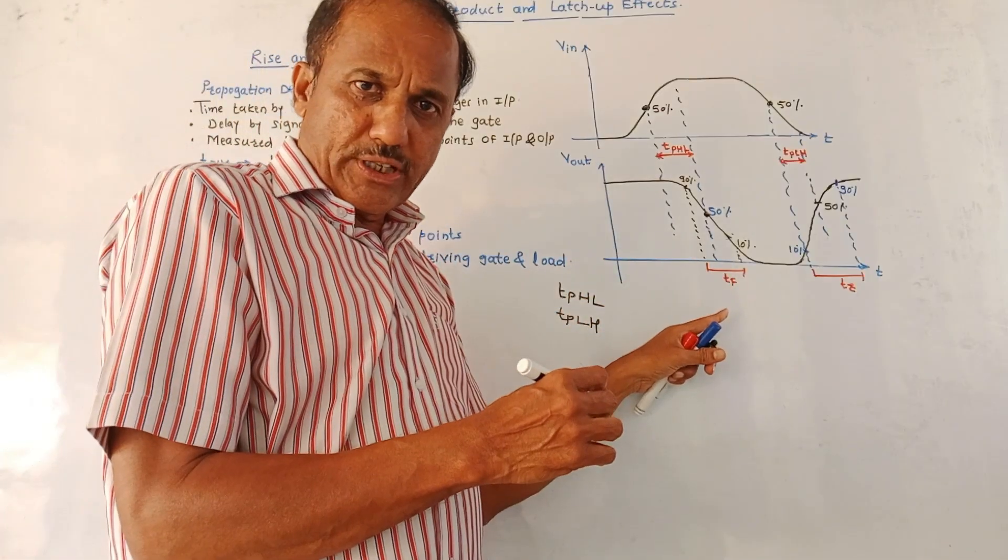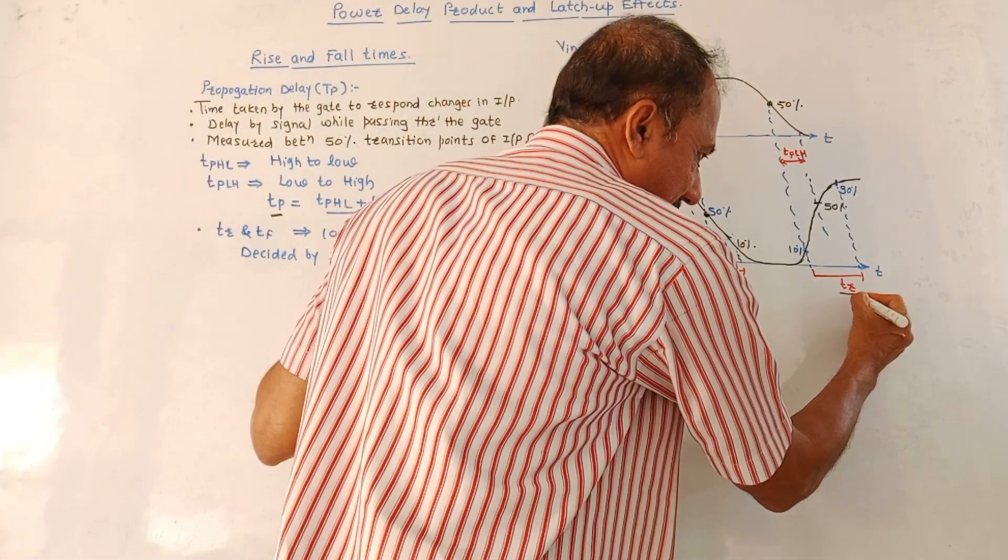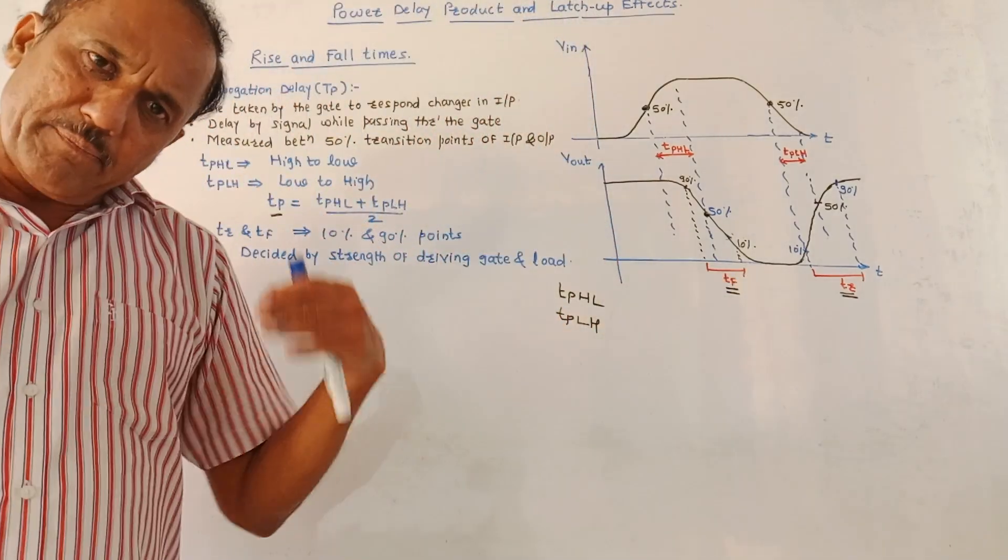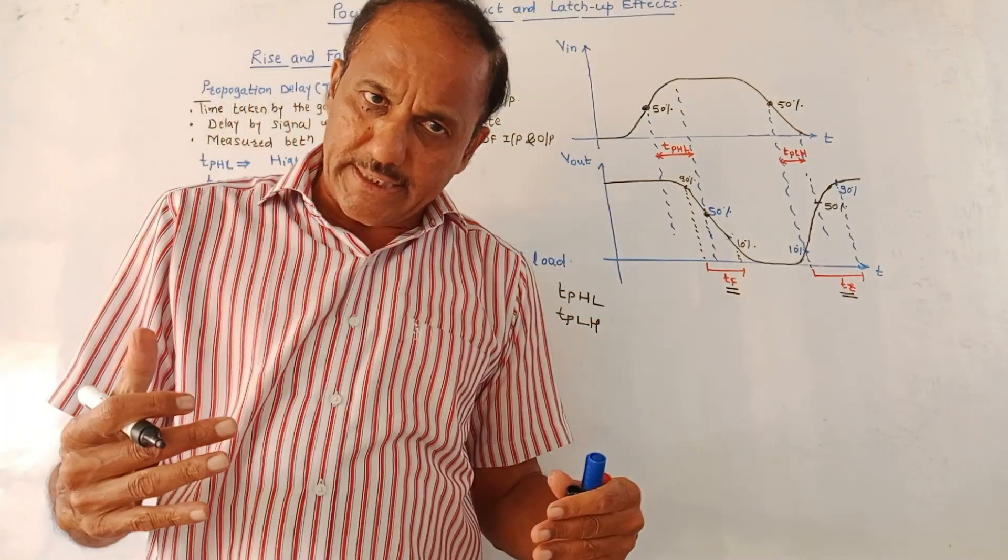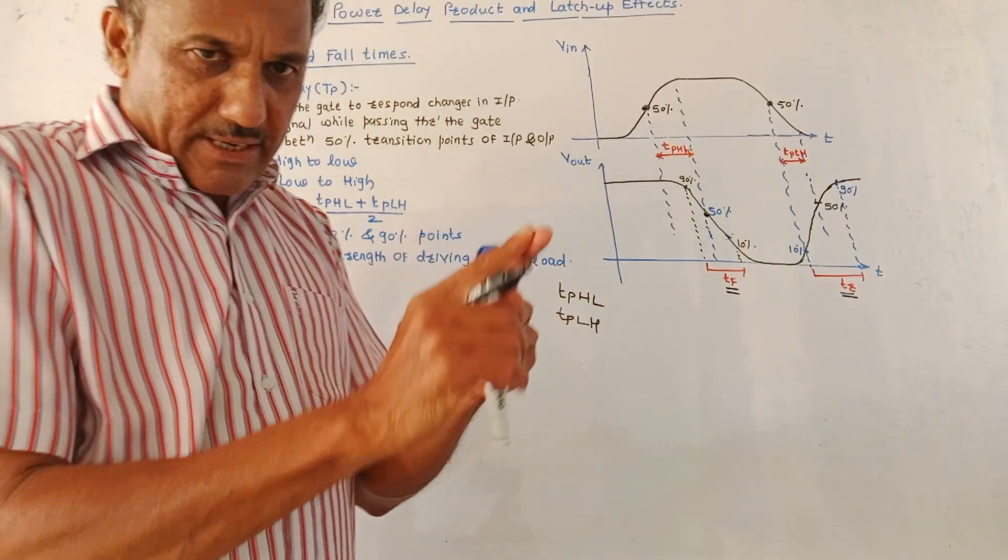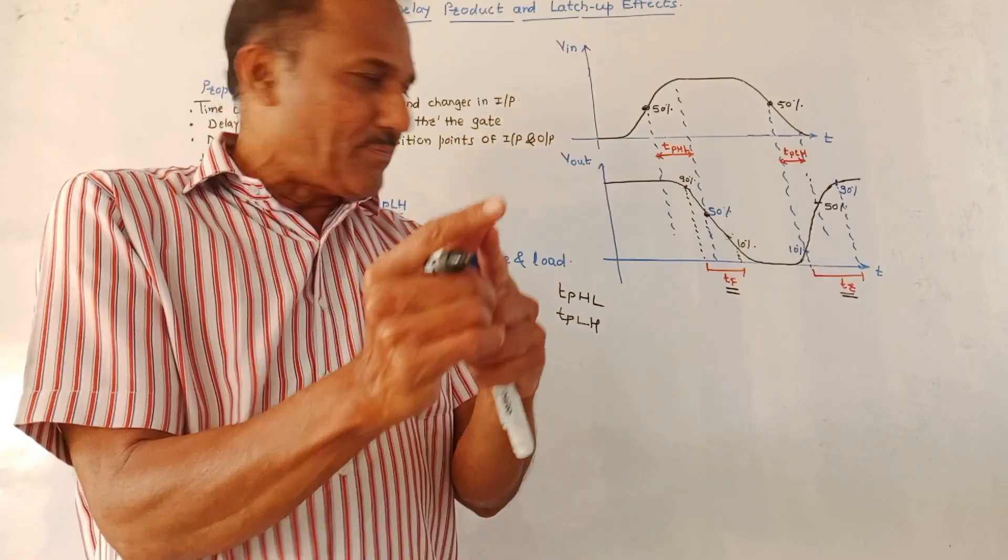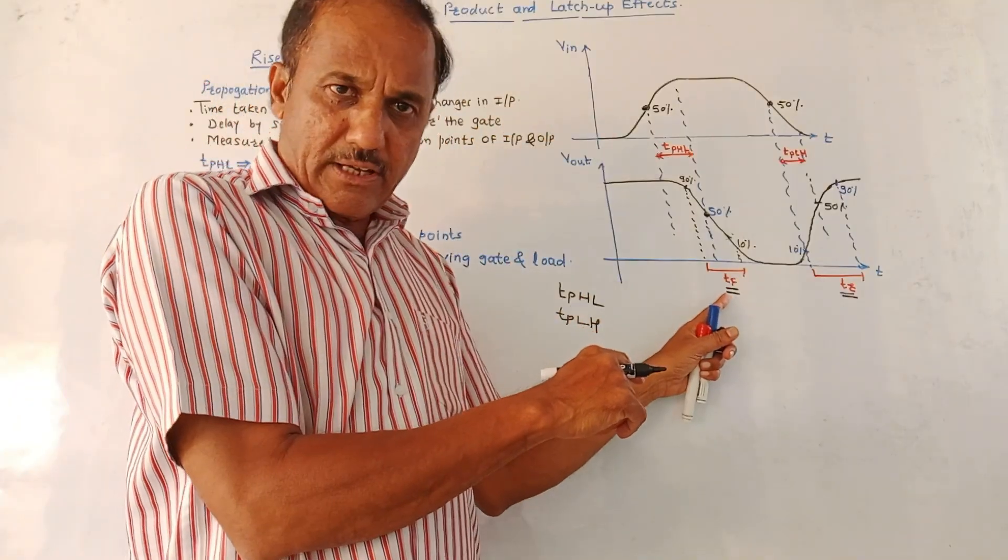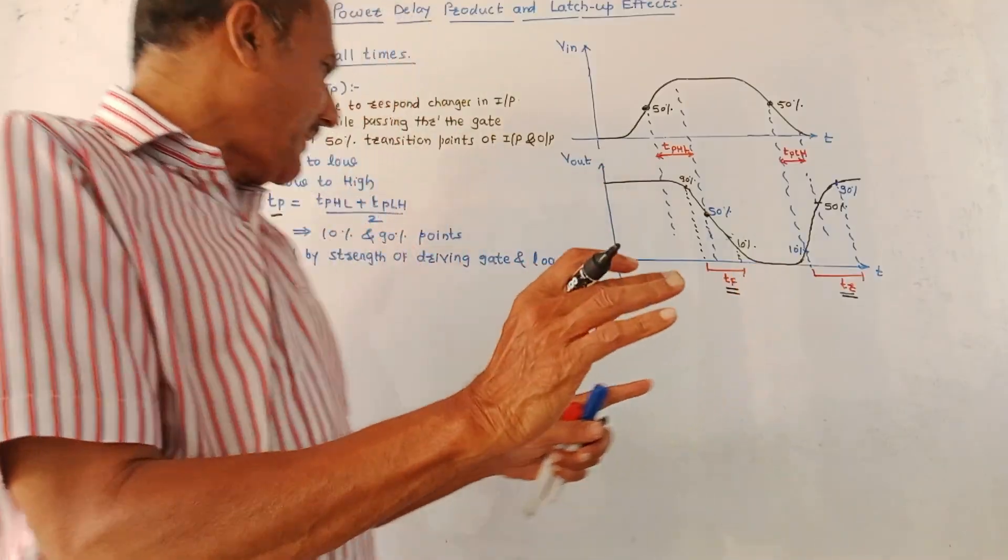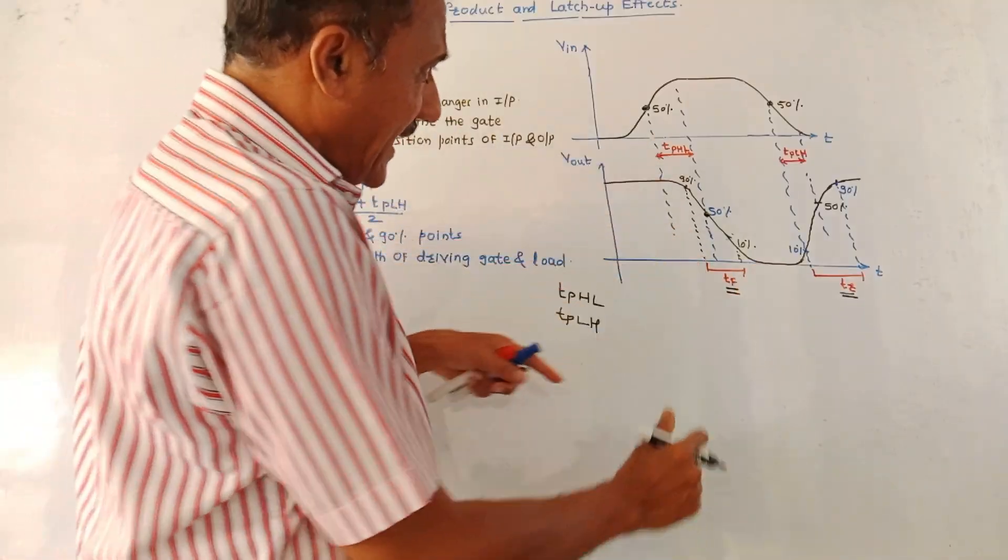There are two more terms which are shown in this diagram. One is rise time TR and another is fall time TF. The concept remains same what we have studied in earlier subjects. TR is the rise time. It is measured between 90% and 10% of the value. Same technique, TF is the fall time which is again measured between 10% and 90%.